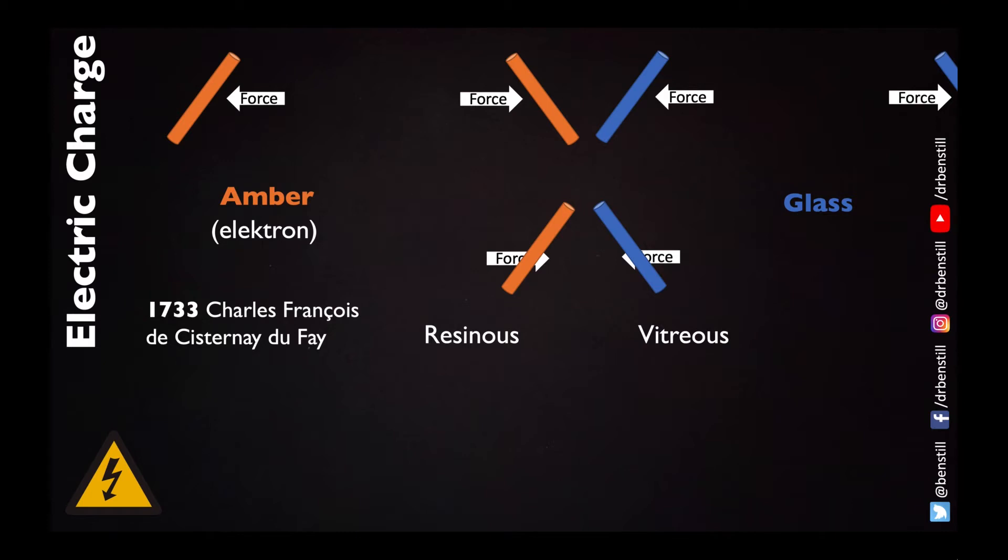Resinous electricity was associated with amber and vitreous with glass and similar materials, but in 1750 the polymath Benjamin Franklin decided to go for a different tack. Instead of calling these things different names he came up with an analogy of using numbers to talk about electricity. His idea was that there was some underlying electrical fluid responsible for these two different types. One object, the glass, had an excess or positive amount of this fluid, whereas the amber had a deficit or negative amount of this electrical fluid.